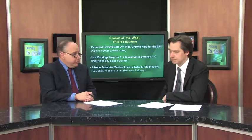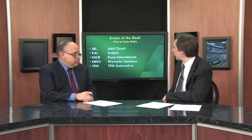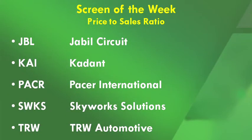A number of stocks came through the screen. Here are five that look particularly attractive: JBill Circuit, Cadent, Pacer International, Skyworks Solutions, and TRW Automotive. All of these companies have growth rates better than the median for their industry and valuations that are quite attractive as well. It's a very diverse set of industries, which makes the screen so good — you're finding the best ones across a big lay of the land.